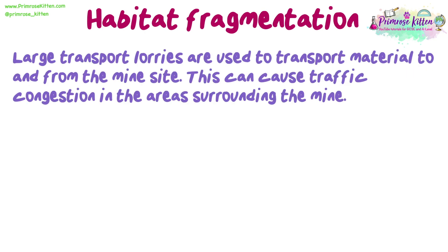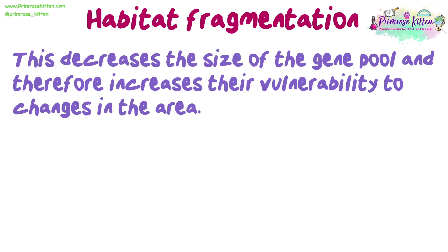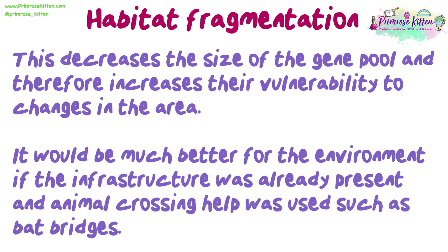Habitat fragmentation. Large transport lorries are used to transport material to and from the mine site, which can cause traffic congestion in surrounding areas. This may cause the mining company to build their own infrastructure, whether a road or a railway. The building of transport routes often causes habitat fragmentation, where populations are separated and cannot mix freely, meaning they may not interbreed. This decreases the size of the gene pool and increases their vulnerability to changes in the area. It would be much better if the infrastructure was already present and animal crossing aids such as bat bridges were used.